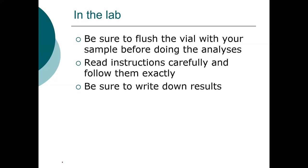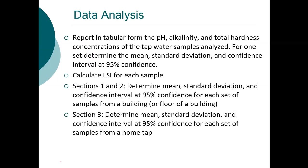For data analysis, report the data in tabular form for pH, alkalinity, total hardness, and conductivity. For one set you'll determine the mean, standard deviation, and confidence interval. You will then use that information to calculate the LSI. For sections one and two, determine the mean, standard deviation, and confidence interval for each set of samples in a building — you can aggregate the information by building as a whole, or look at whether results vary by floor.